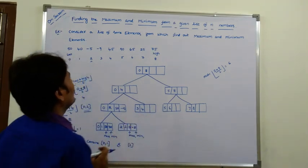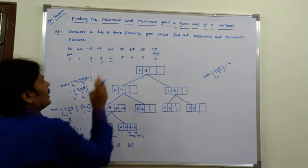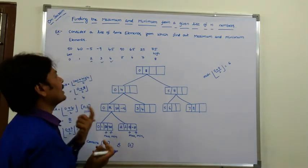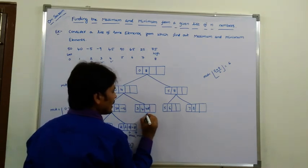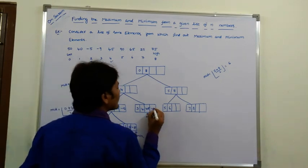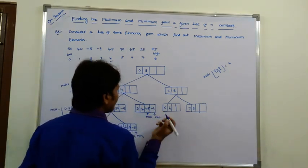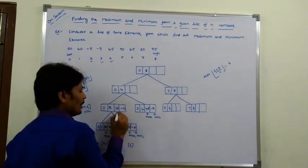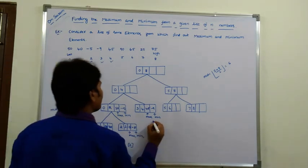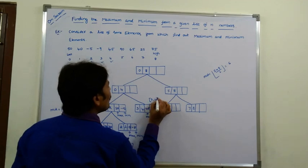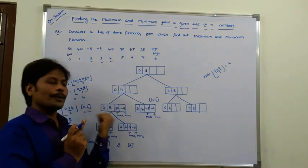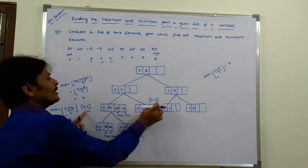Now consider indices 3 and 4: values are -9 and 45. Comparing -9 and 45, the maximum is 45 and the minimum is -9. Now combining sublists [0 to 2] and [3 to 4] to form [0 to 4].